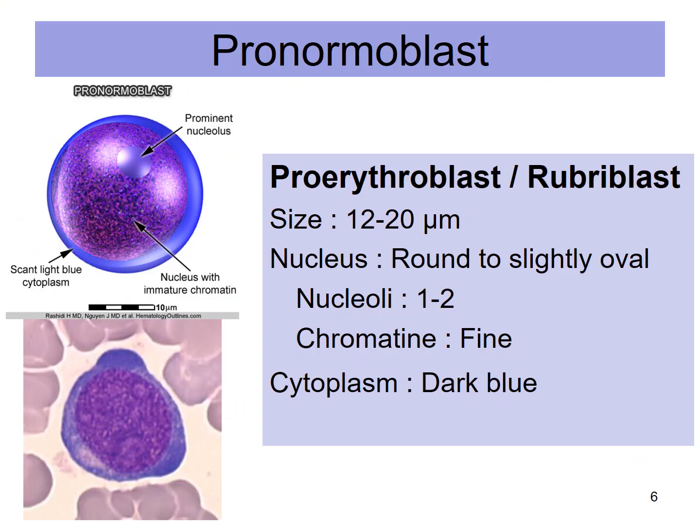Pronormoblasts are also named as the proerythroblast, or rubriblast. Its size is 12 to 20 micrometers, with a round to slightly oval nucleus. It has 1 to 2 nucleoli with fine chromatin and dark blue cytoplasm.